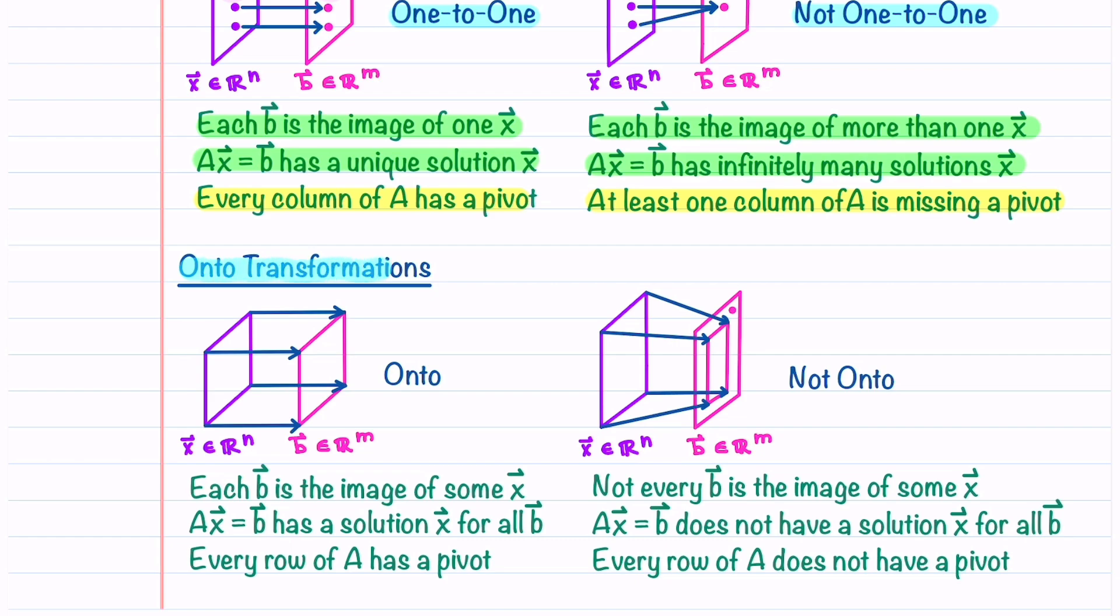Let's now look at onto transformations. If a transformation is onto, each b is the image of some x. This means that Ax equals b has a solution for all b and that every row of A has a pivot.